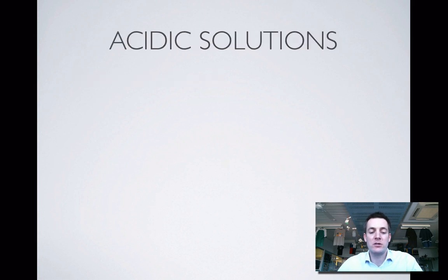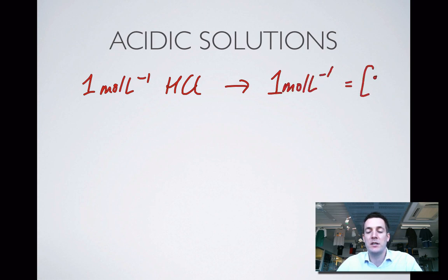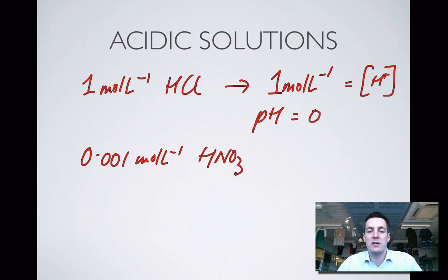Let's just have a quick look at some acidic solutions. Let's say I had 1 mole per liter HCl. I know that's a strong acid, so all of it is going to turn into H plus ions, so the concentration of H plus is equal to 1 mole per liter. So the pH will be 0. If I had 0.001 mole per liter nitric acid, it's also a strong acid, so I'll know I'll have exactly the same concentration of H plus ions, 0.001 moles per liter H plus, and so for the pH, well, that has to be 3.